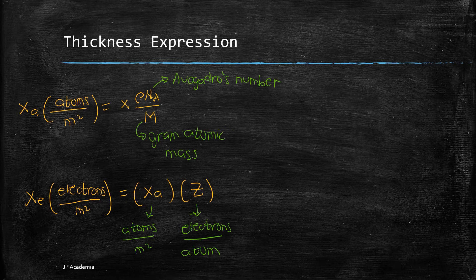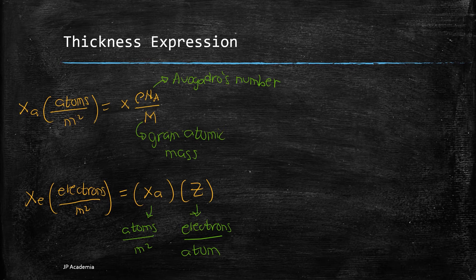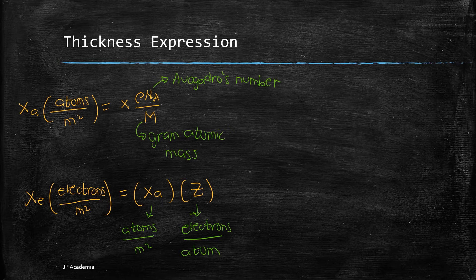So we have your x sub a which is equal to x the thickness times the quantity rho the mass density. We have the Avogadro's number n sub a. Then we have the gram atomic mass.